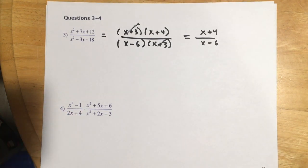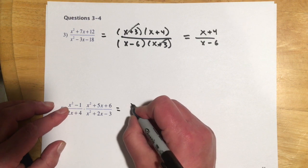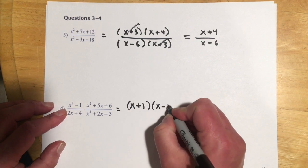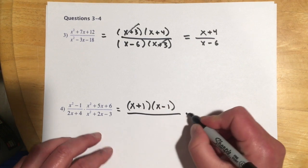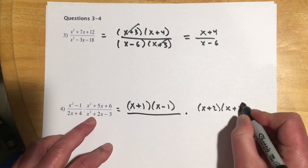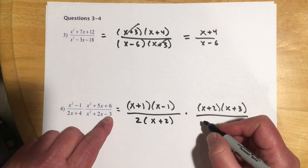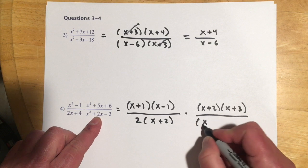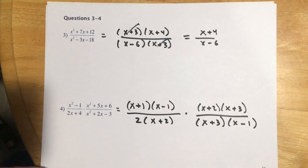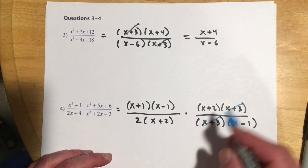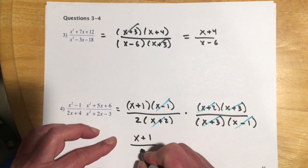Example 4 is a multiplication, so we just factor and cancel — no reciprocal needed. The first numerator is a difference of squares: (x+1)(x-1). The denominator factors as (x+2)(x+3). The next numerator has a GCF of 2, giving 2(x+2), and the remaining piece factors as (x+3)(x-1). Canceling (x+3), (x+2), and (x-1) leaves only (x+1) over 2.